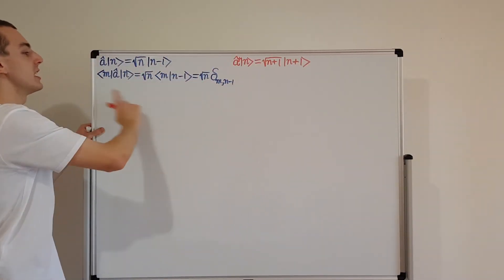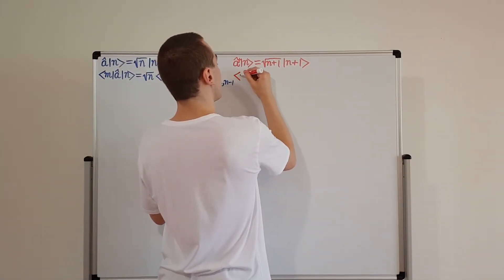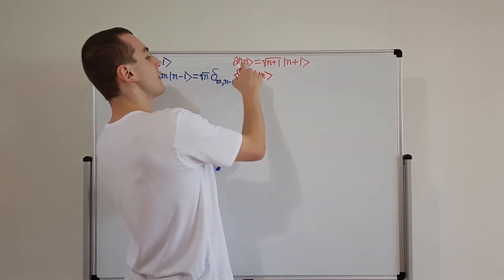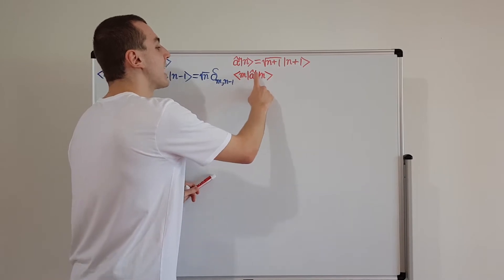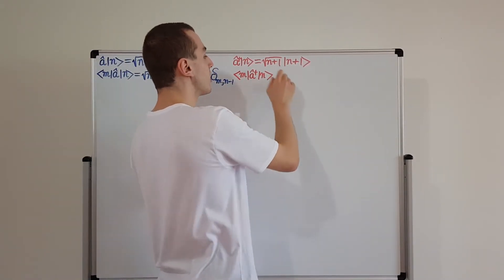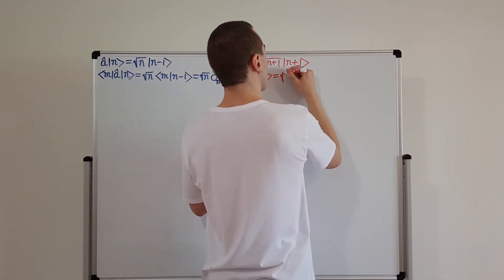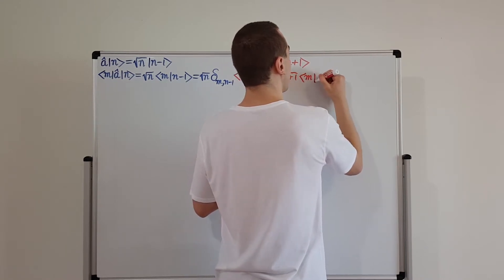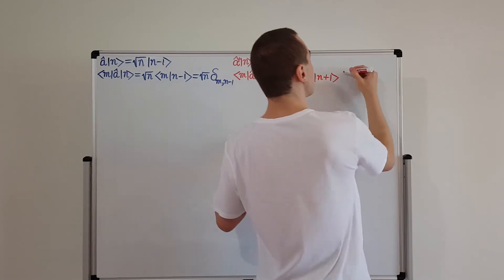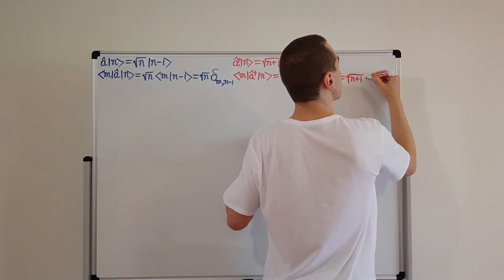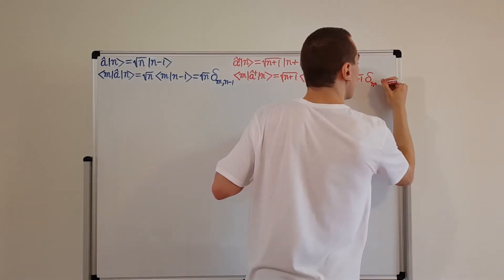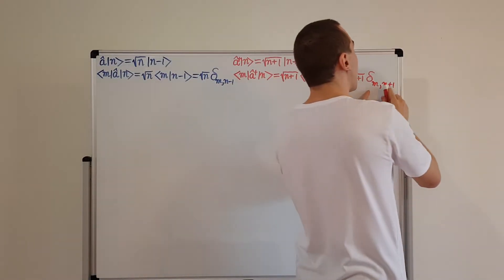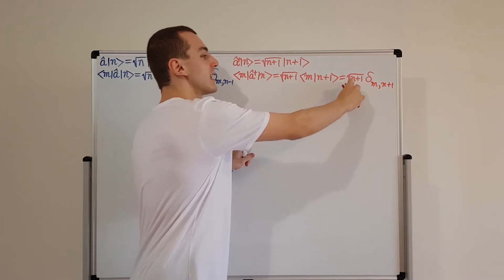Let's use the same sandwich procedure for â†. We have ⟨m|â†|n⟩. We can substitute the raising operator relationship, pulling out a factor of √(n+1), giving us √(n+1)·⟨m|n+1⟩. We can write this as a Kronecker delta: √(n+1)·δ(m, n+1). Can you see how these relationships are analogous? For â we had δ(m, n−1), and for â† we have δ(m, n+1). Inside the square root we have n+1, coming from the normalization coefficient.